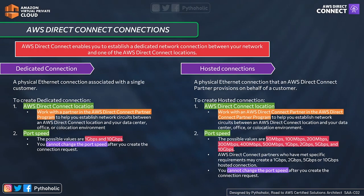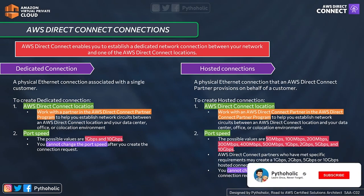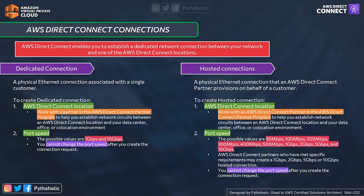Another important aspect is port speed — the maximum speed at which data is transferred, essentially your bandwidth. For dedicated connections, the possible port speed values are 1 Gbps and 10 Gbps. For hosted connections, values range from 50 Mbps, 100 Mbps, 200 Mbps, 300 Mbps, 400 Mbps, 500 Mbps, 1 Gbps, 2 Gbps, 5 Gbps, and 10 Gbps. AWS Direct Connect partners who meet specific requirements may create 1 Gbps, 2 Gbps, 5 Gbps, up to 10 Gbps hosted connections.